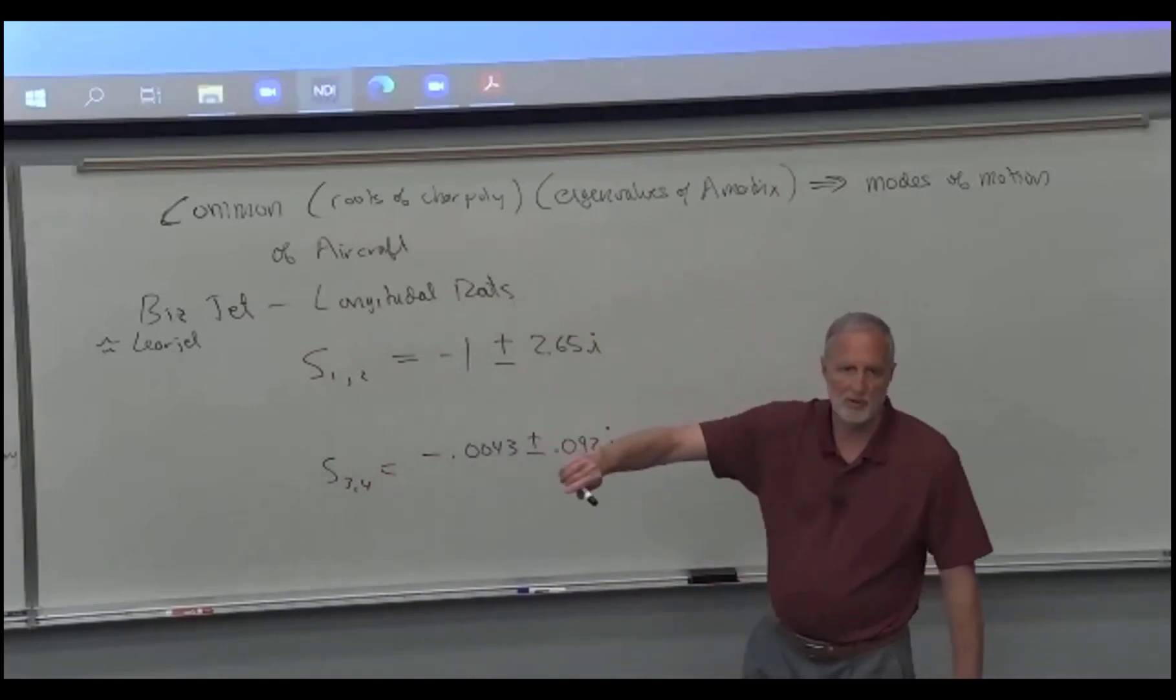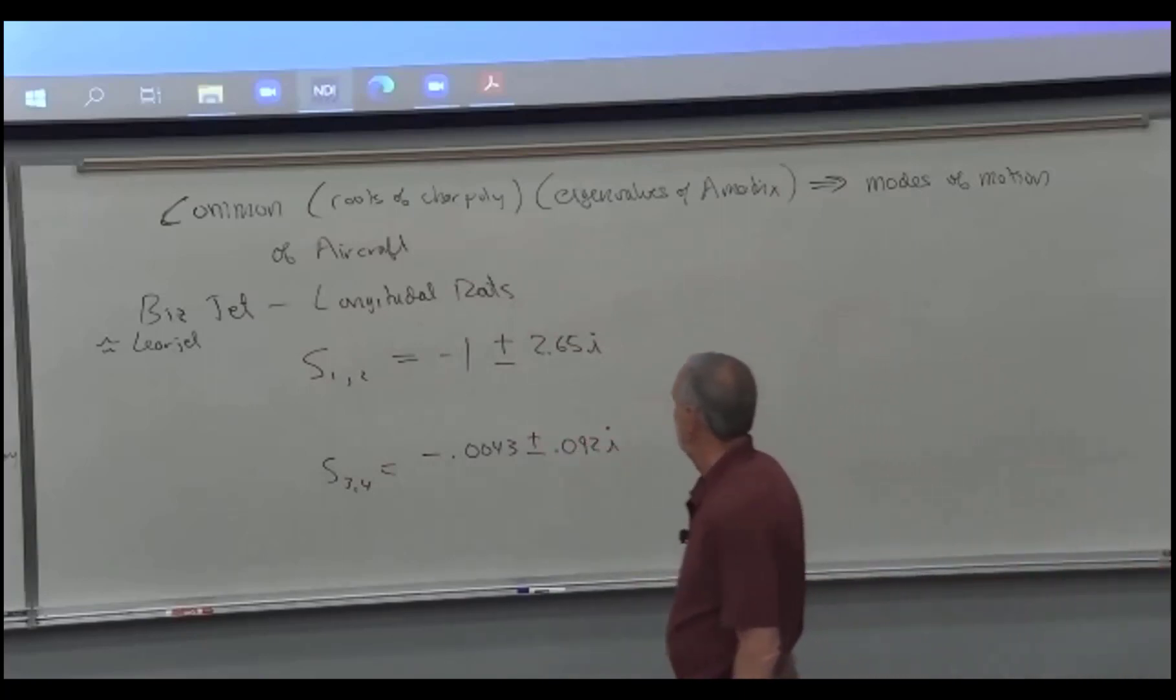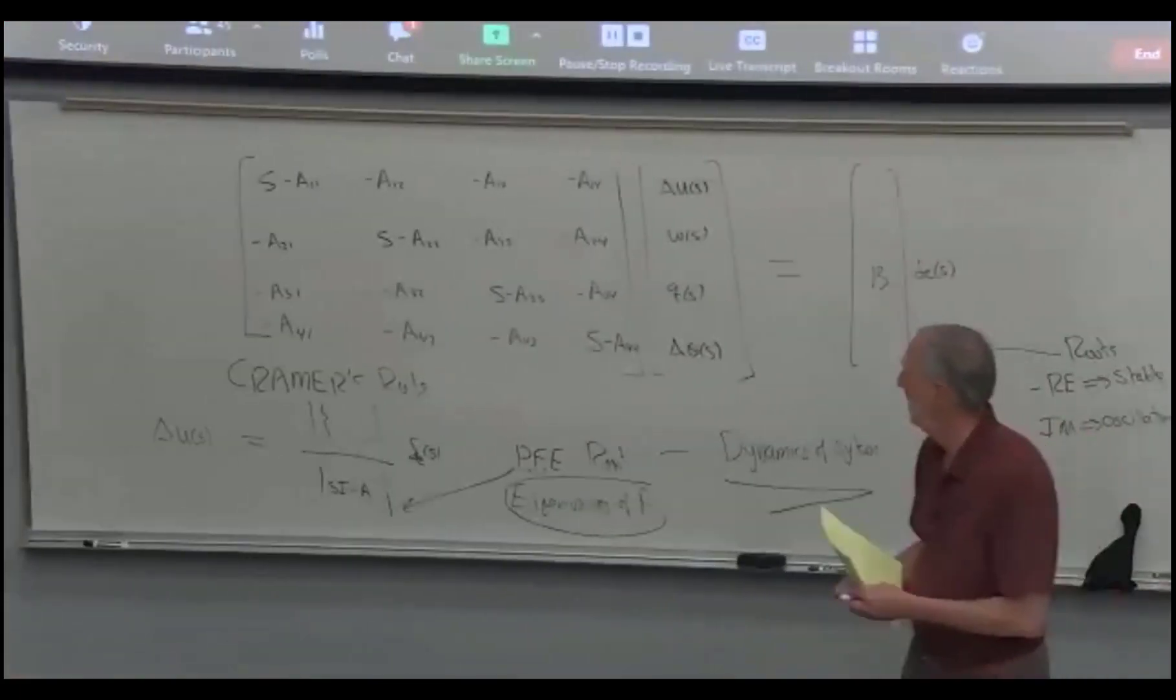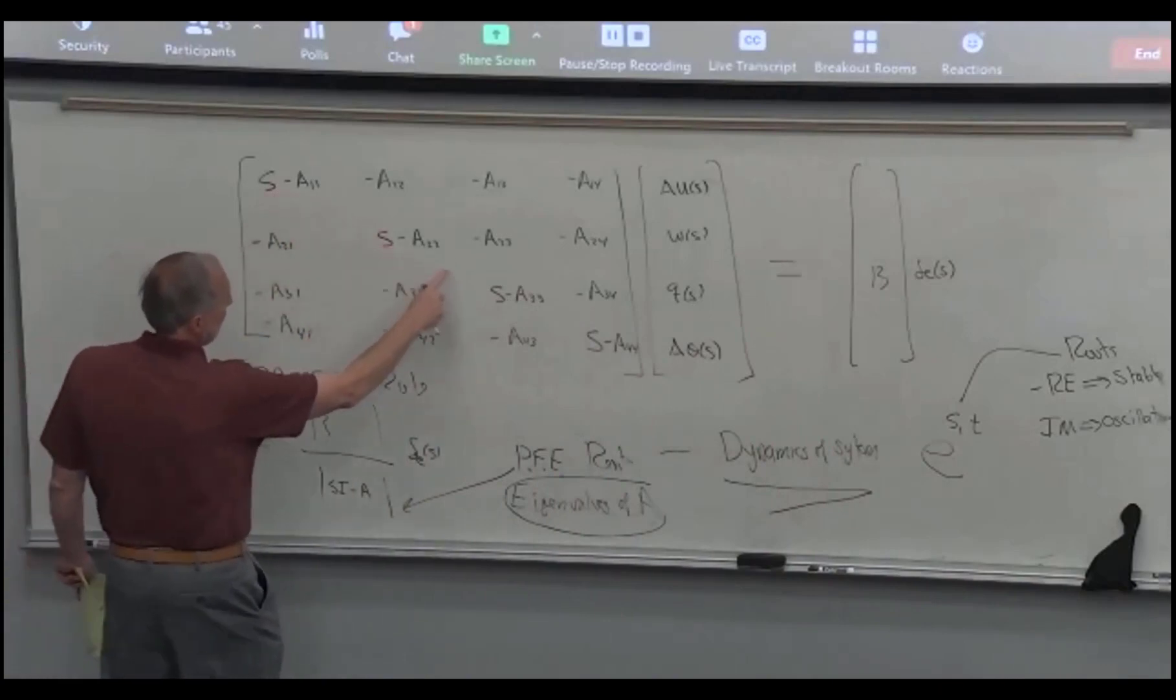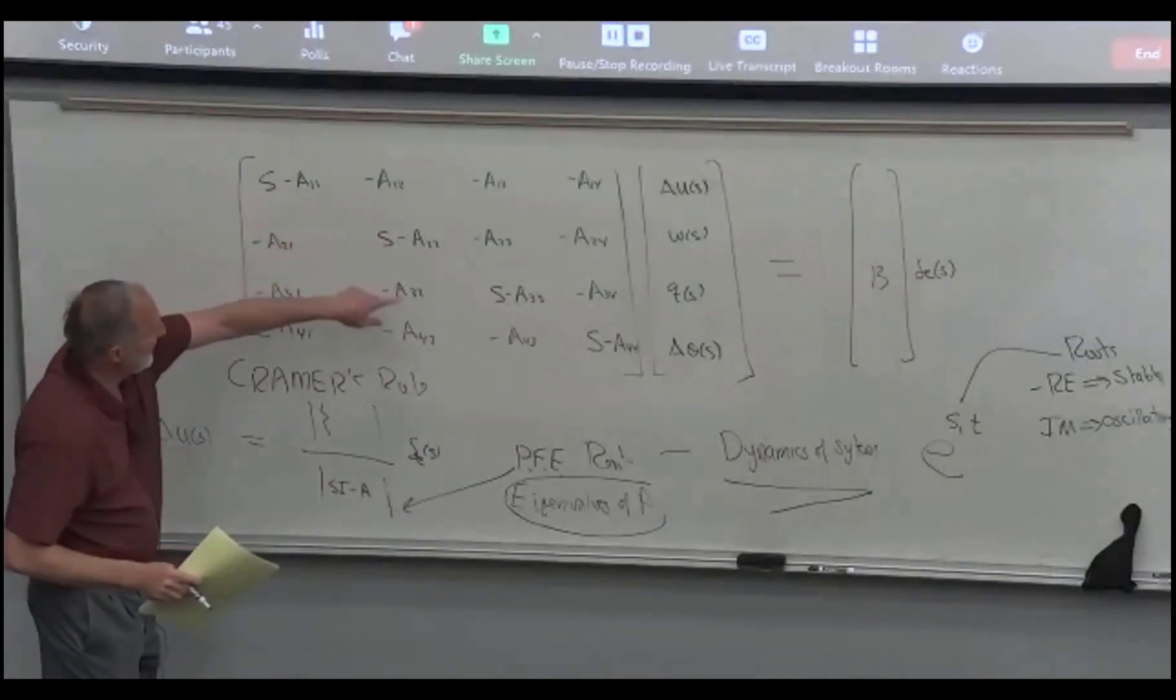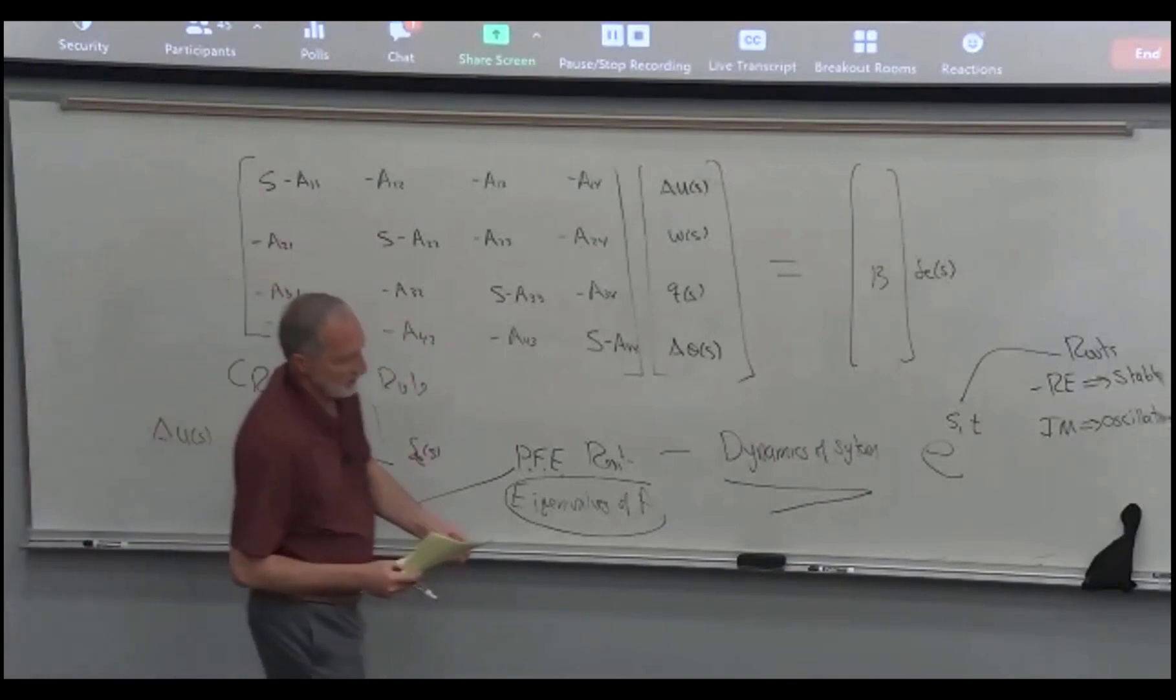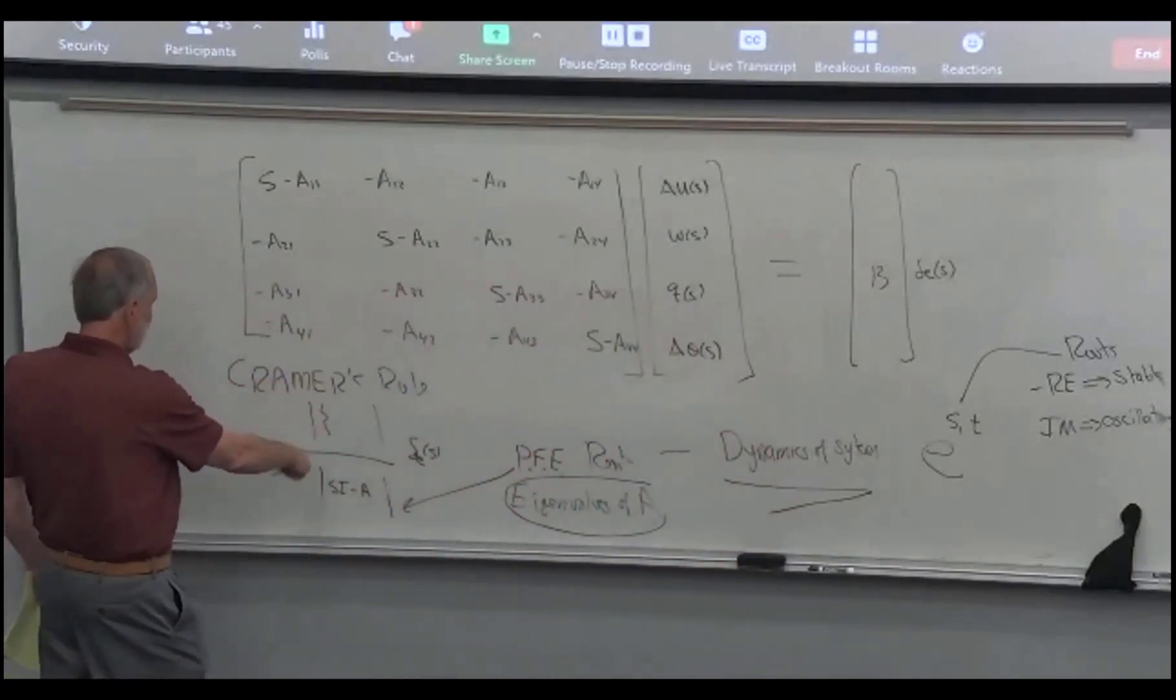For the BizJet, you plug in all of the aerodynamic and geometry parameters into that big state space matrix, you find the eigenvalues. Notice we get four. We should expect that because we have an S here, an S here, an S here, and an S here. When we do the determinant, we're going to get S times S times S times S somewhere. So we have a fourth order polynomial. So you get four roots.